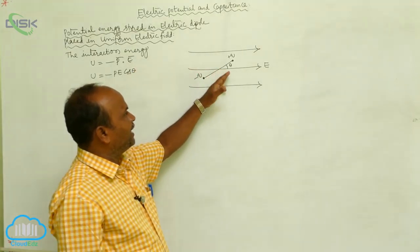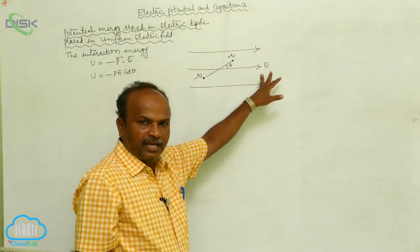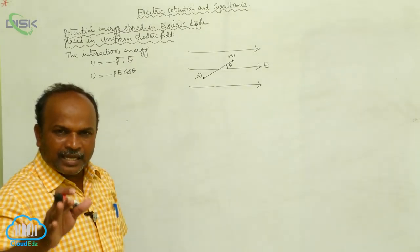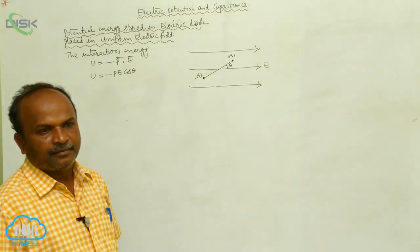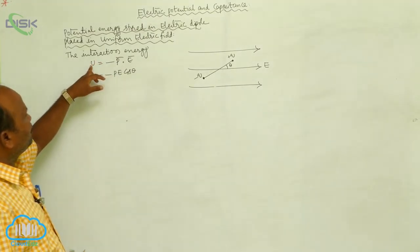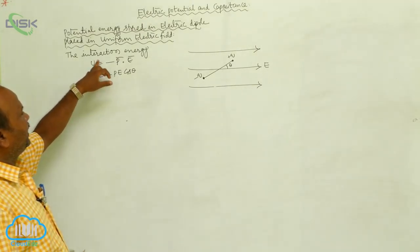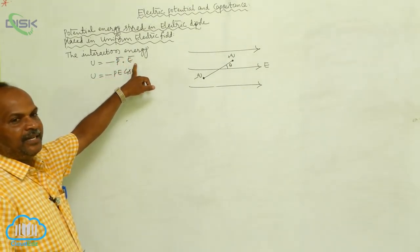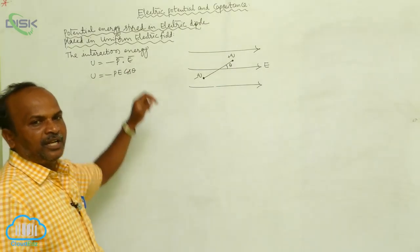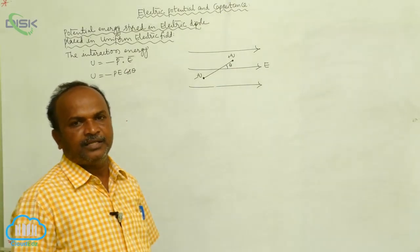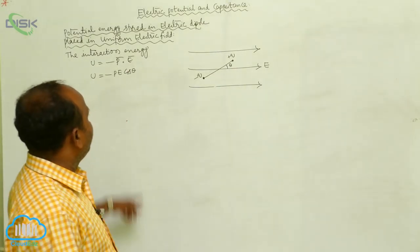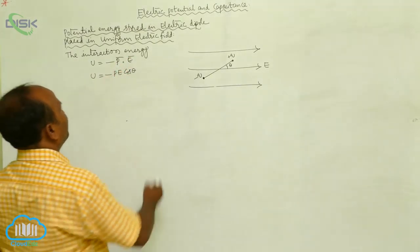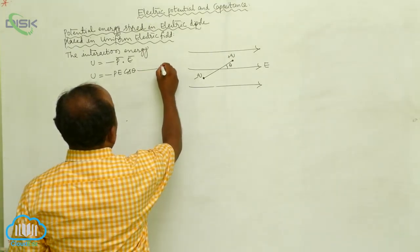When the dipole is making an angle theta with respect to the electric field, there is an interaction energy defined as U equal to the negative dot product of dipole moment and electric field intensity. Since P-bar dot E-bar equals PE cos theta, this gives the cosine equation for interaction energy.